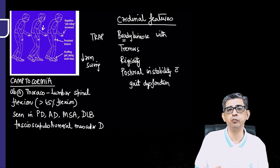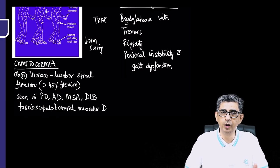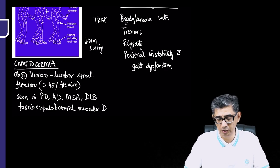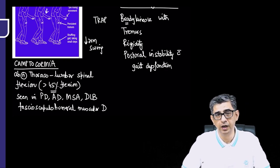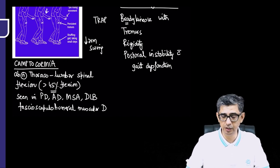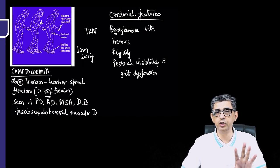The person will have a stooped posture, which might even be written in books as camptocormia. Camptocormia is defined as an abnormal thoracolumbar spine flexion, and there's an arbitrary cutoff to it, that's almost more than 45% flexion. The highlight of camptocormia is that this Parkinson disease patient, when he's walking, he's bent forward, he's stooped forward, but when he will lie down, he'll be able to lie straight.